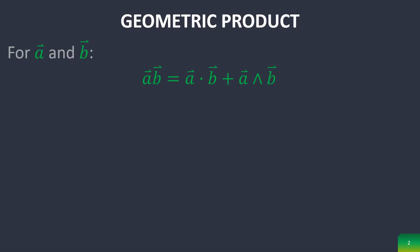For vectors a and vector b, it's equal to the scalar product of the two vectors plus the outer product of the two vectors, which represents the sum between a scalar and a bivector.